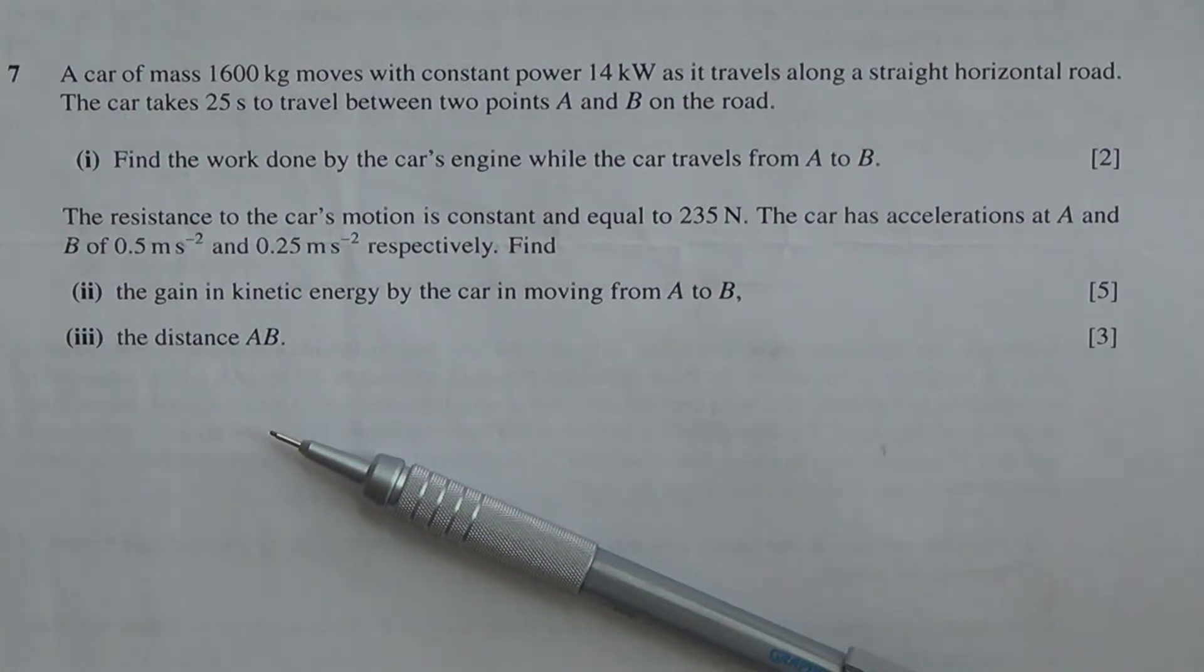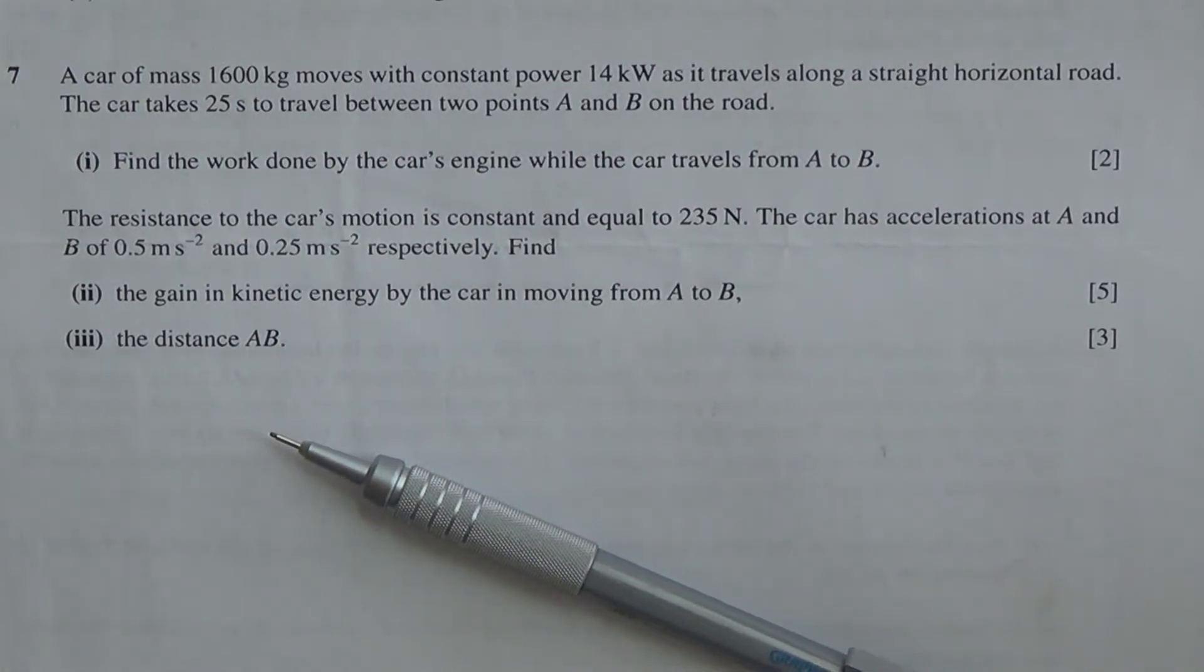Hi, a car of mass 1600 kilograms moves with a constant power 14 kilowatts as it travels along a straight horizontal road. The car takes 25 seconds to travel between two points A and B on the road.